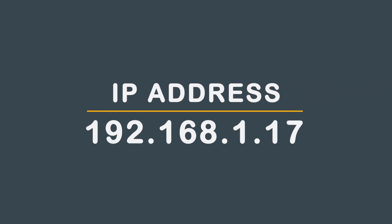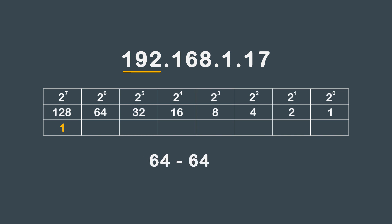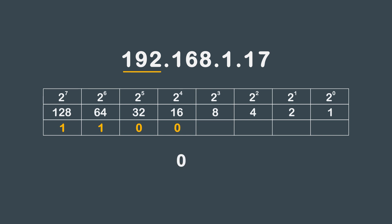Now let's take the same IP address 192.168.1.17 and use the weighted method. To determine what bits are turned on, subtract the largest number possible from the octet you are translating. 192 can have 128 subtracted, so we add a 1 in the 128 block and subtract 128 from 192 — you get 64. 64 can have 64 subtracted, so we add a 1 in the 64 block and subtract 64 from 64 — you get 0. Since 0 cannot have 32, 16, 8, 4, 2, or 1 subtracted, we add a 0 in all remaining blocks.